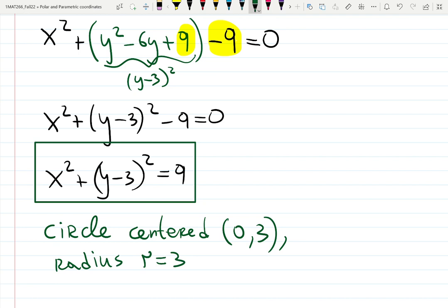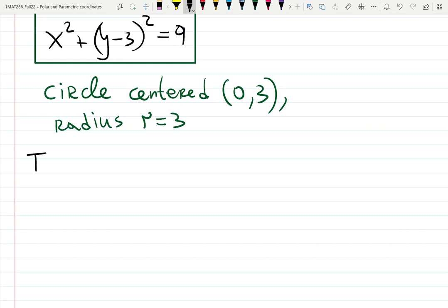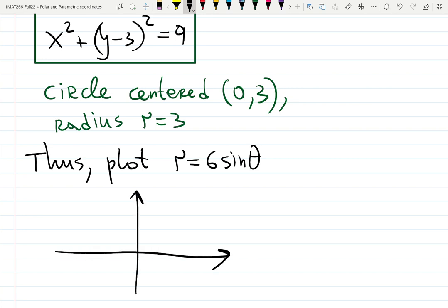They told us to plot. They told us to plot. Thus, if I want to plot this unusual looking function as r equals 6 sine theta. That is apparently a circle. That is a circle. That's crazy. r equals 6 sine theta is a circle shifted up by 3 units.